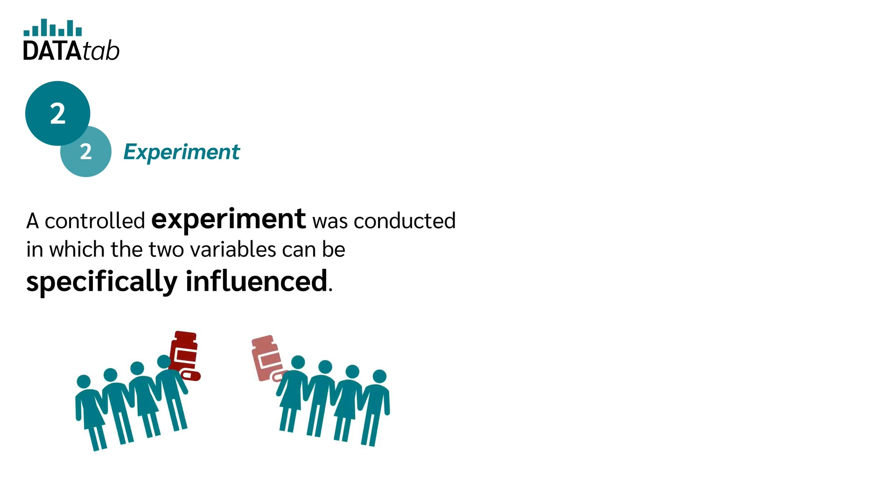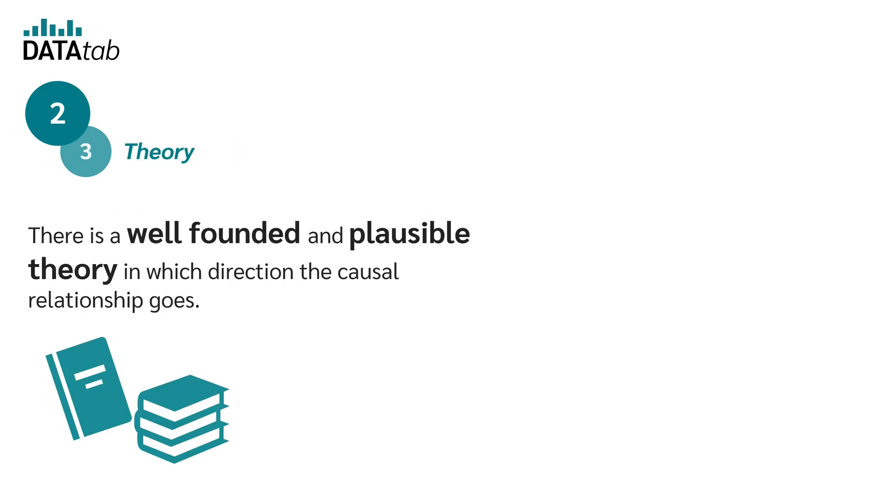Second, experiment. A controlled experiment was conducted in which the two variables can be specifically influenced. And number three, theory. There is a well-founded and plausible theory in which direction the causal relationship goes.